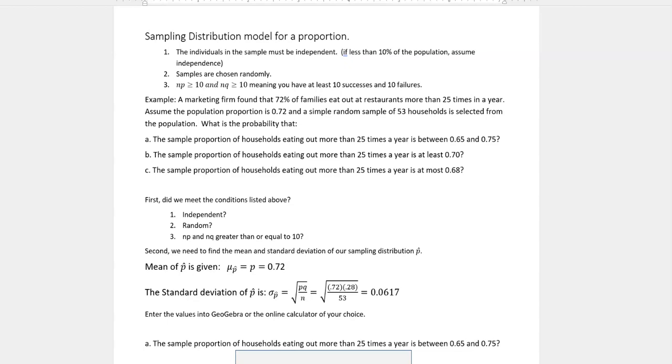The standard deviation of our proportion is given by the square root of pq over n. p was given as 0.72, q is always 1 minus p, in this case 0.28, and our n was given as 53. If I plug that in, I get 0.0617.